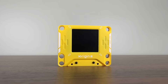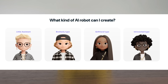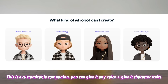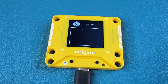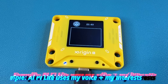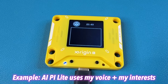What you can do with this is you can turn it into your own AI companion. It can talk to you, and the best part is it is fully customizable. If you want, you can give it your own voice. Here's an example where I set the AIPi Lite to use my own voice as it's talking to me.